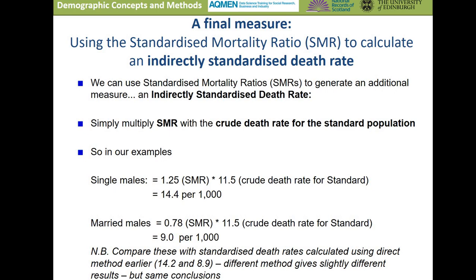A final measure we can calculate from the SMR is the indirectly standardized death rate. We simply multiply the standardized mortality ratio by the crude death rate for the standard population. In our example for single males, we had an SMR of 1.25 and the crude death rate for the standard was 11.5, giving an indirectly standardized death rate of 14.4 per thousand. For married males, the SMR was 0.78, indicating lower mortality than the standard; multiplying by the crude death rate for the standard gives an indirectly standardized death rate of 9 per thousand. We can then compare these indirectly standardized death rates for the two groups and be confident that age structure isn't driving any differences.